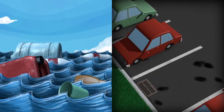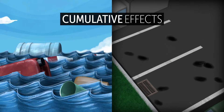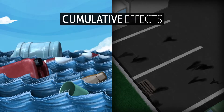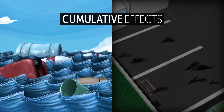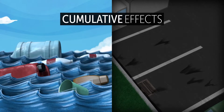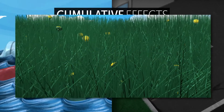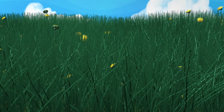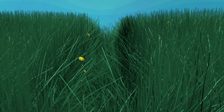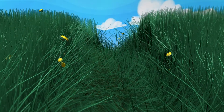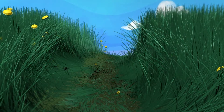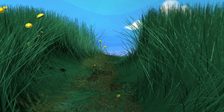They contribute to what we call cumulative effects. And they can negatively affect ecosystems, communities, health and economies. In the same way that a path becomes worn when people use it over and over, cumulative effects add more and more stress to ecosystems, even if that's over years or decades.